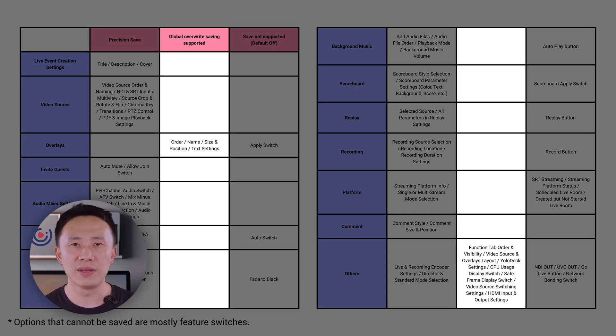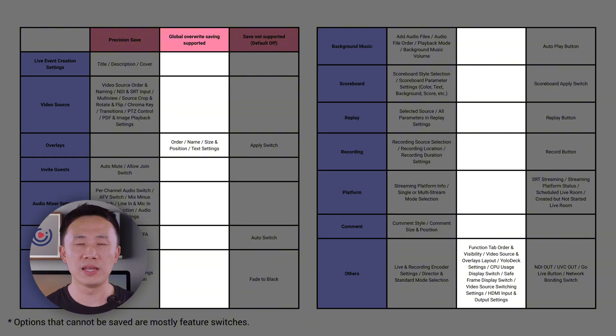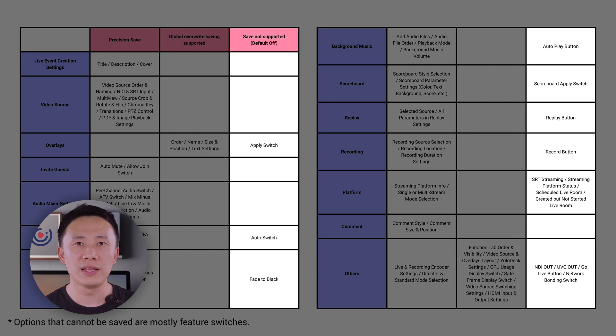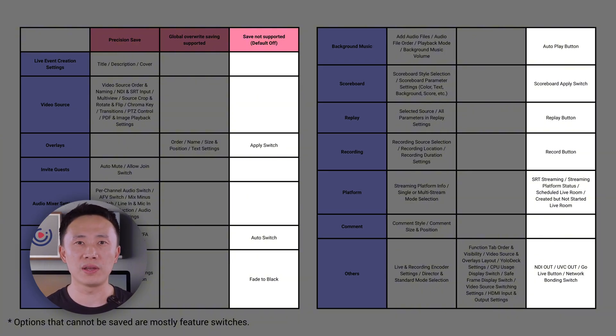It's important to clarify that the parameters just mentioned are saved on a project level, meaning they only apply to that specific project and won't affect others. But there are also system-wide parameters that apply across all projects once you make changes. These include overlay parameters like order, naming, position, and size, as well as the tab layout, visibility, and Yolodeck settings. Video source and overlay layouts also fall under global coverage. Other system-level settings include CPU usage display, safe zone frames, video source switching preferences, and HDMI input-output display settings. Certain functions that involve toggling — such as NDI-out, UVC-out, replay on/off, and scoreboard on/off — are always disabled by default and cannot be saved in an on state. We'll go into more detail about these parameters in an upcoming video.